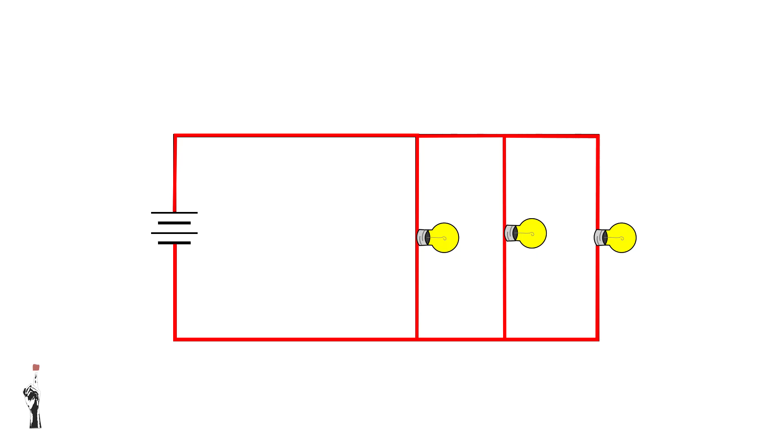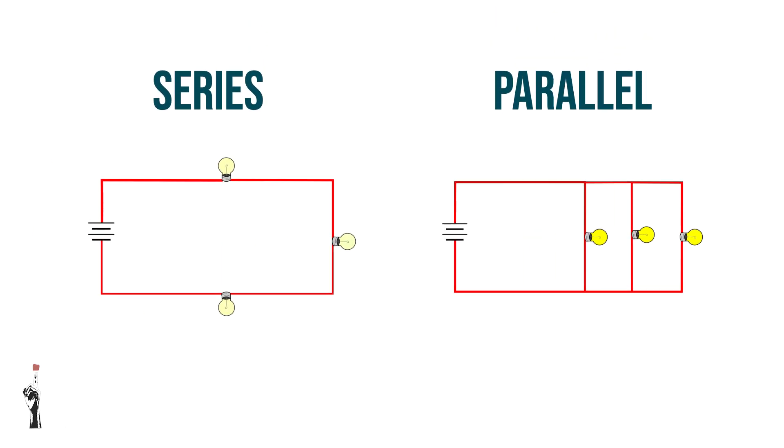In a series, more components means more resistance and therefore, dimmer bulbs. However, in a parallel, more parts means easier flow and as a result, brighter bulbs.